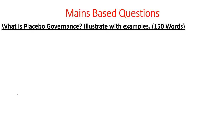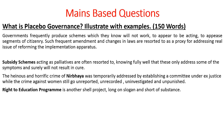Let's look into the main answer writing. The question says: what is placebo governance? Explain or illustrate with examples. The word 'placebo governance' was given by TSR Subramaniam, the ex-cabinet secretary who recently passed away. Governments frequently produce schemes which they know will not work, to appear to be acting and appease segments of the citizenry — such frequent amendment and changes in laws are resorted to as a proxy for addressing the real issue of reforming the implementation apparatus. What this basically means is the government knows that a particular scheme, policy, or program will not work effectively, but to reduce tension prevalent in society, they come up with a particular law — knowing it will not be implementable or successful — just to pacify citizens. Such implementation is what is called placebo governance.